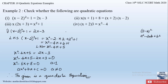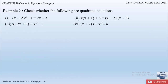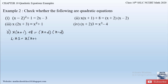Similarly, let us solve the other three parts of example 2. The second part is: x(x + 1) + 8 = (x + 2)(x − 2). First, let us simplify the left-hand side: x(x + 1) + 8. Multiplying and opening the brackets: x × x = x², x × 1 = x, so we get x² + x + 8.